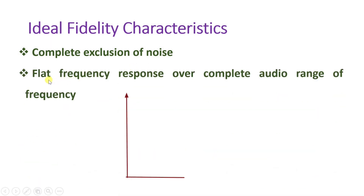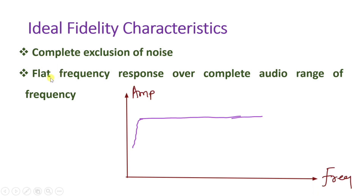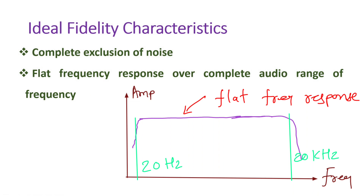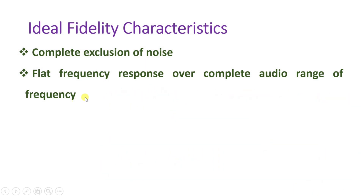The system with ideal fidelity should have flat frequency response over the complete audio range of frequency. That audio range of frequency varies from 20 Hz to 20 kHz for humans. So ideal fidelity has flat frequency response over the complete audio range from 20 Hz to 20 kHz.